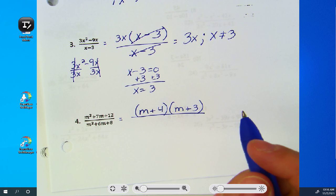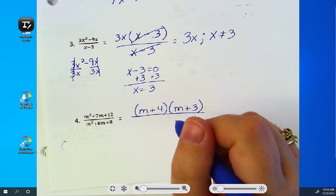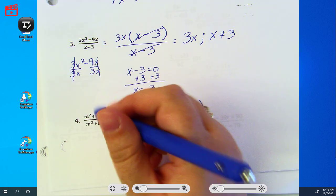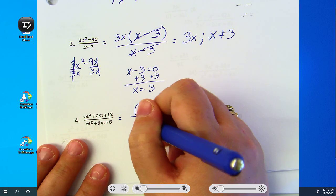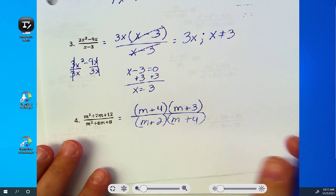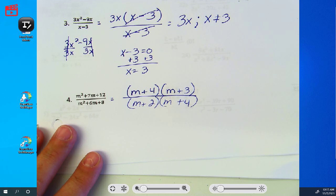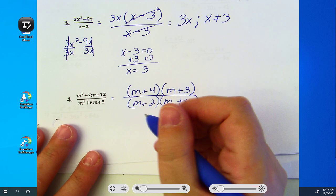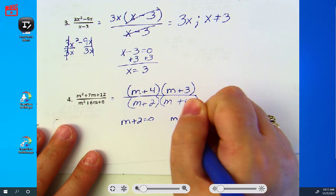Two or three terms? Three. Factors of eight that add up to six? Two and four. Before you simplify, what are we setting equal to zero? The m plus two, the m plus two, and the m plus four. Remember, you do the denominator.